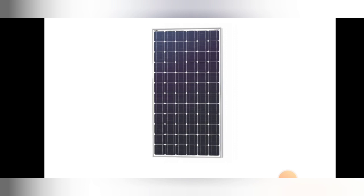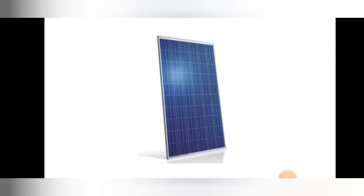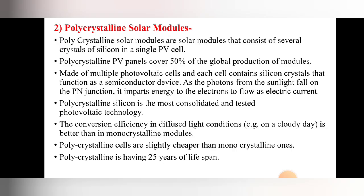The second solar module type is the polycrystalline solar module. In the diagram, all cells are connected in a polycrystalline form, which is why it is called the polycrystalline solar module.